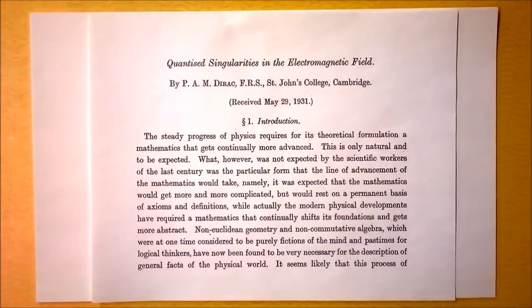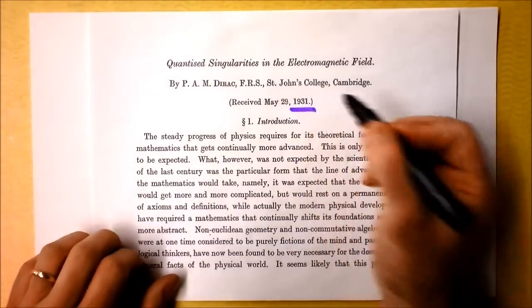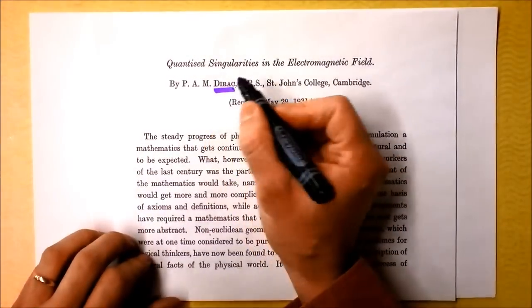So I already told you internet punks that electric charge has to be quantized if a single magnetic monopole exists in the universe, but you didn't believe me, so I spent my Friday afternoon going back to the paper. We're talking about 1931, we're talking about Paul Dirac.